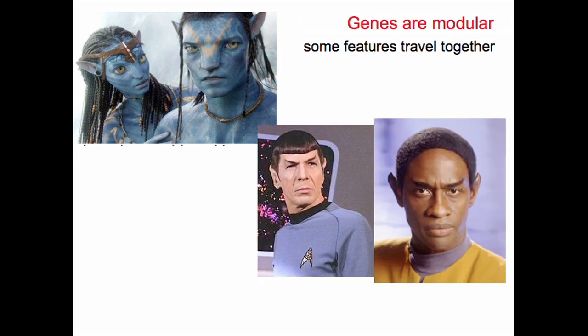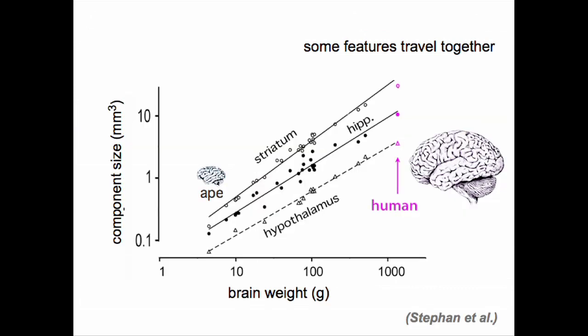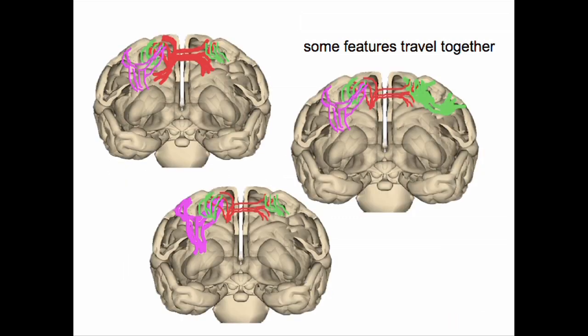Another principle of modular genes is that because traits occur in modules, certain traits will travel together — they'll always go together. So if you happen to have an extremely broad nose, you'll often have blue skin. If you happen to have rising eyebrows, you'll tend to have pointed ears. The brain is no exception. We have the same brain components in the same configurations as all other mammals. And the connections between brain areas also arise from gene modules — so a given pathway occurs in a large or small form as an all-or-none thing, completely independently from other pathways. Those modules determine what kinds of brains we'll have.